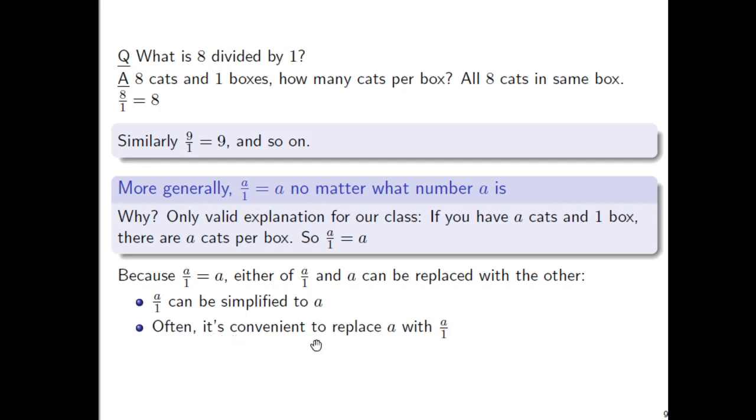Even though A over 1 looks more complicated, there are times you want to take something that does not look like a fraction and turn it into a fraction. So even things that don't look like a fraction, they really are. There's just a hidden 1 in the denominator.